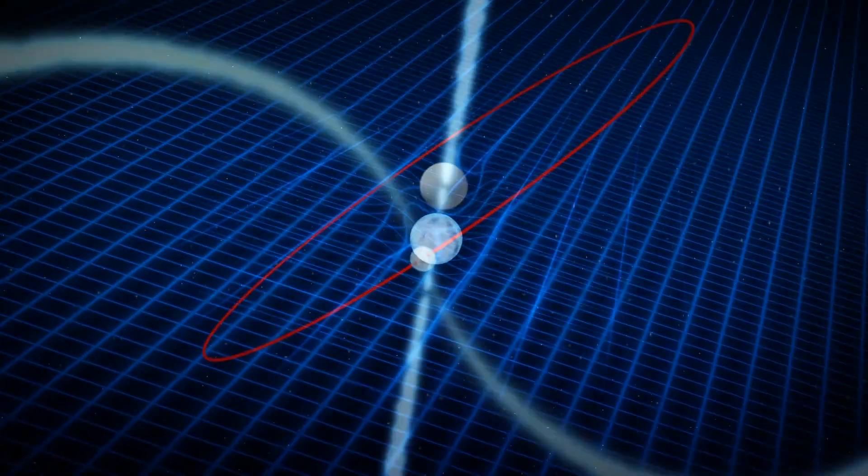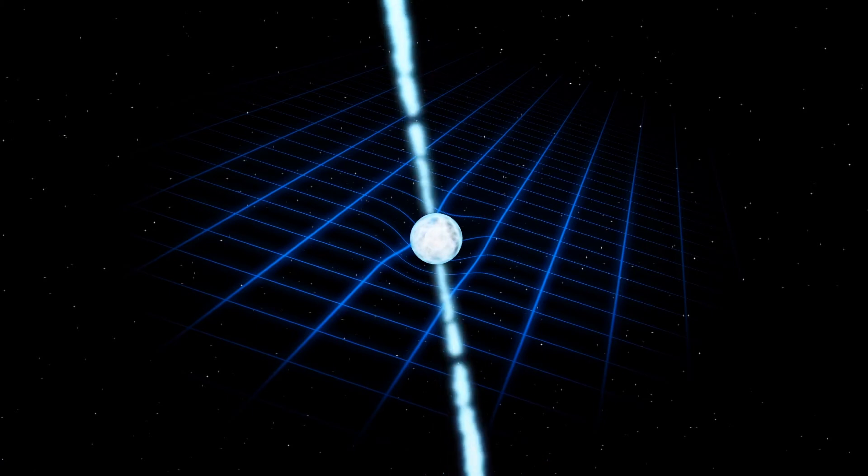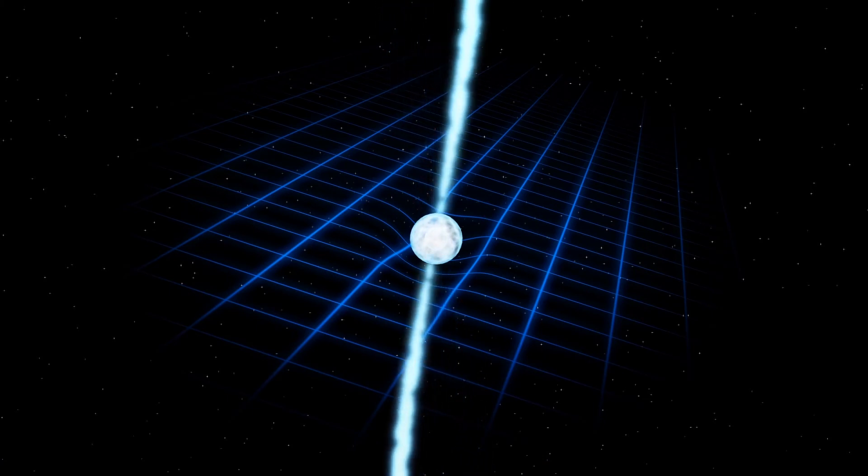Frame dragging imparts a wobbling effect on the pulsar and makes the neutron star twirl on its axis about 30 times an hour.